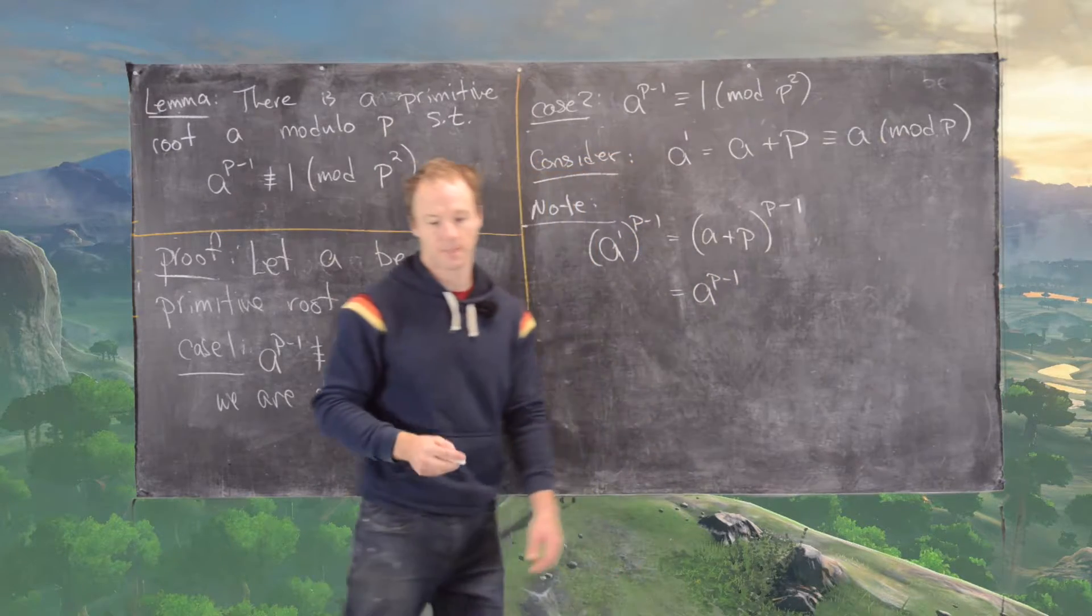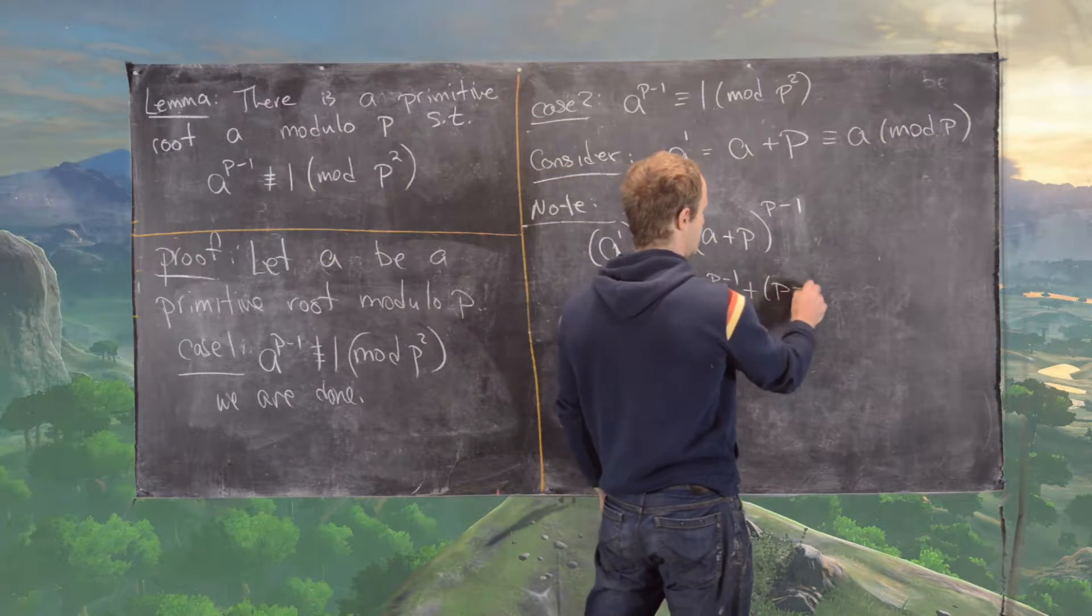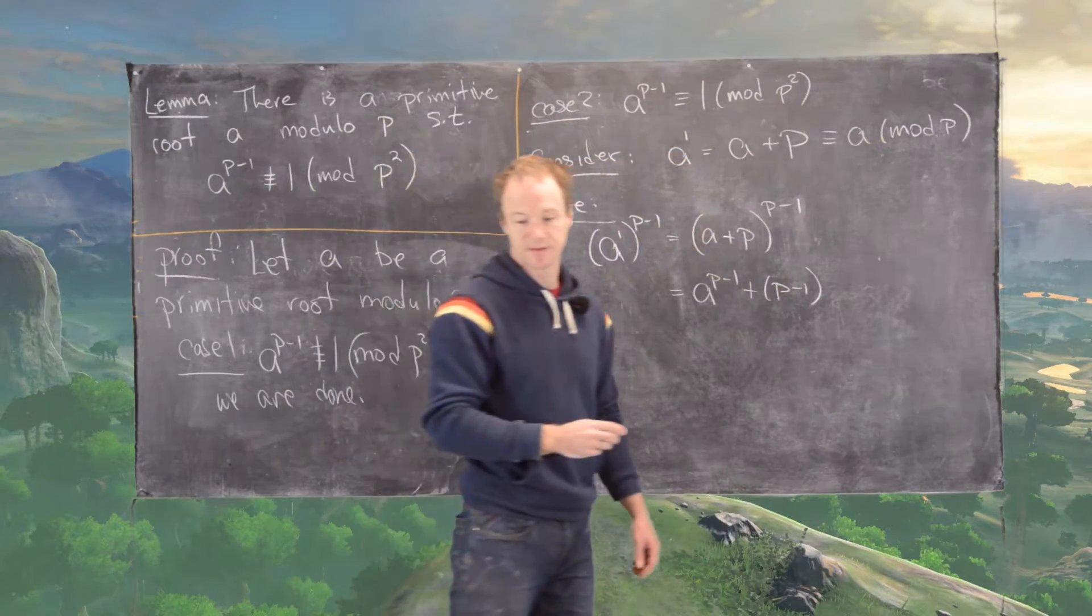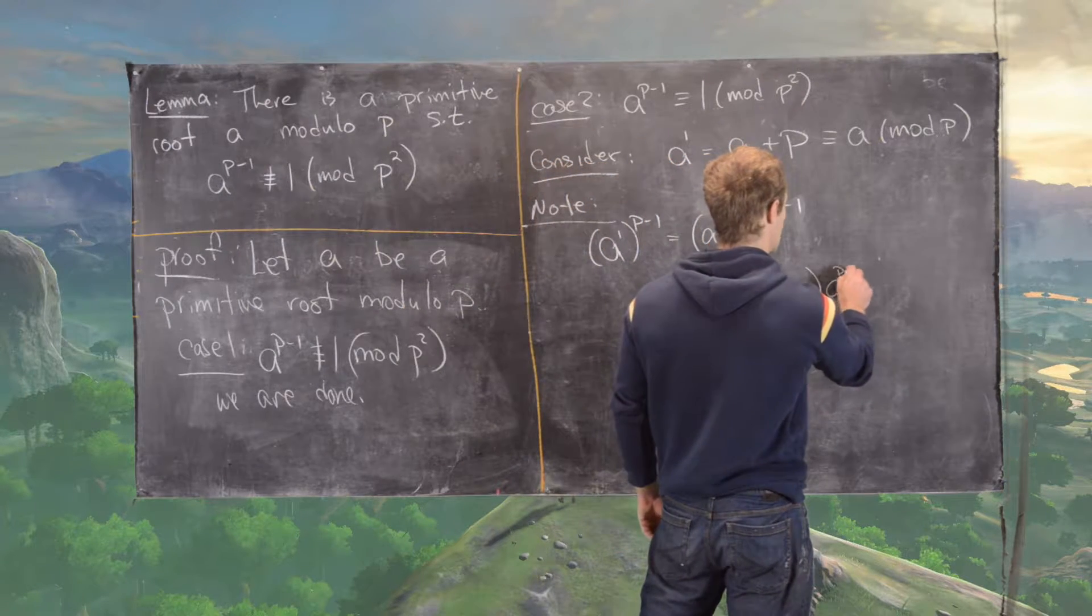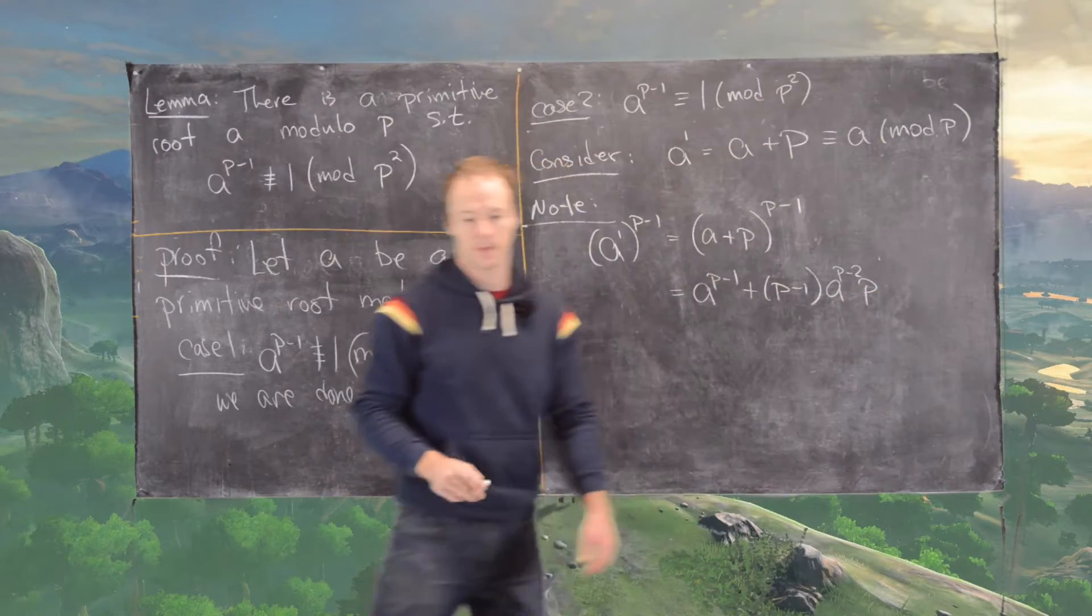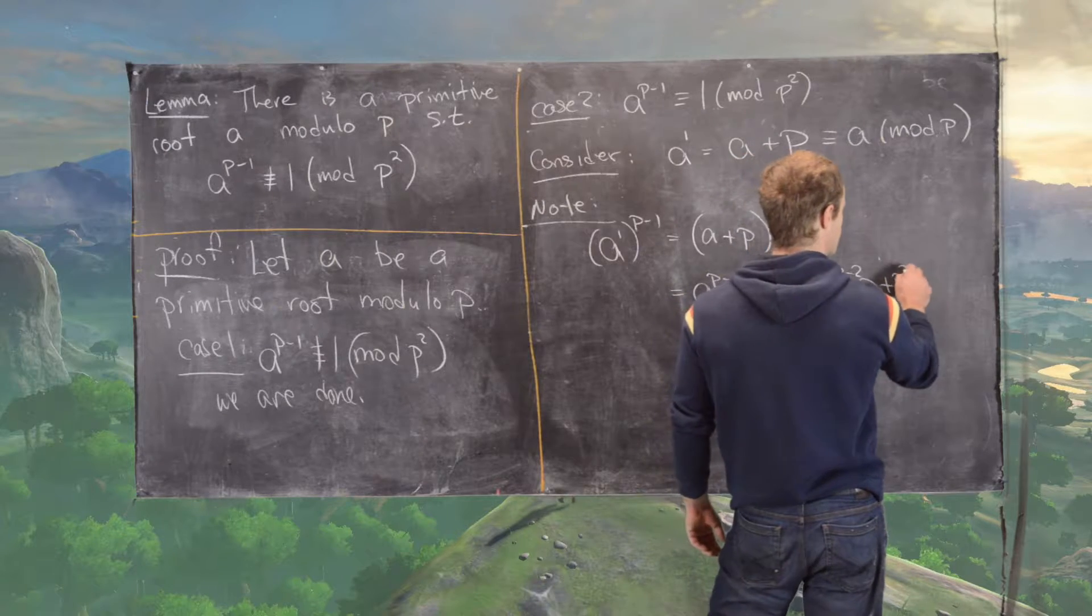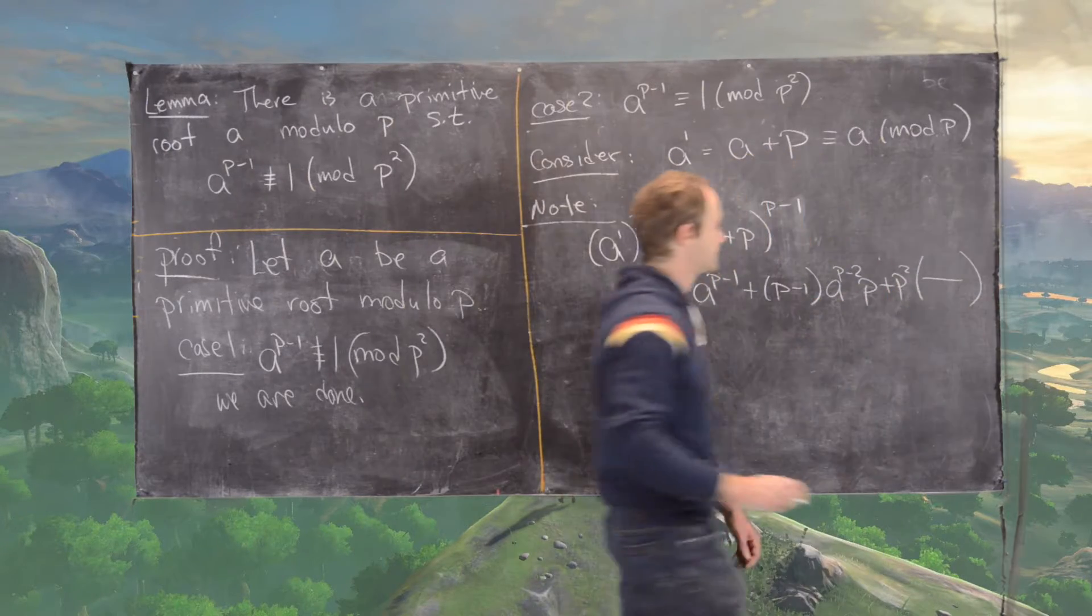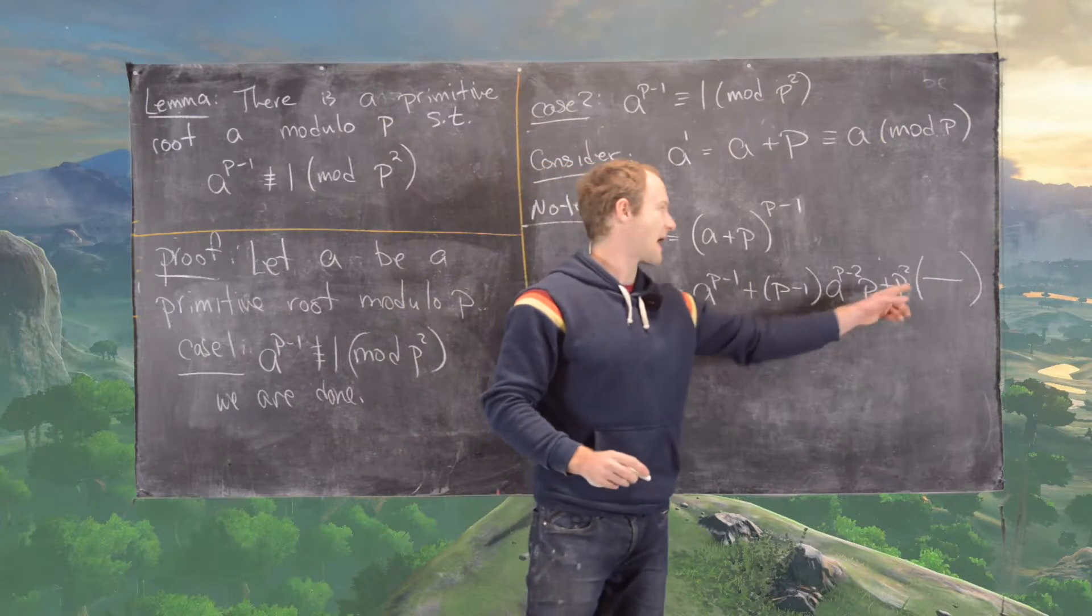plus p minus one times a to the p minus two times p, and then plus p squared times the rest of it.